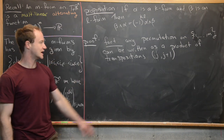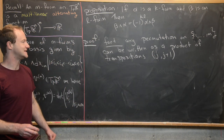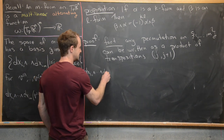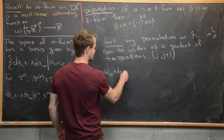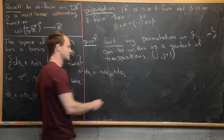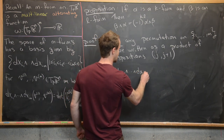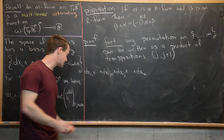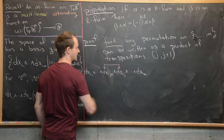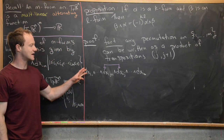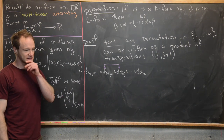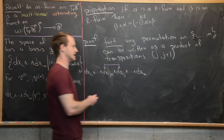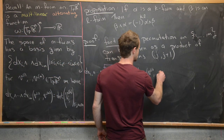Let's start with an elementary m-form where dxᵢⱼ and dxᵢⱼ₊₁ have been switched: dxᵢ₁ ∧ ··· ∧ dxᵢⱼ₊₁ ∧ dxᵢⱼ ∧ ··· ∧ dxᵢₘ. This is the same order as in the definition except those two adjacent terms are swapped. To see how this function differs from the unswitched one, we evaluate it on m vectors v¹ through vᵐ.